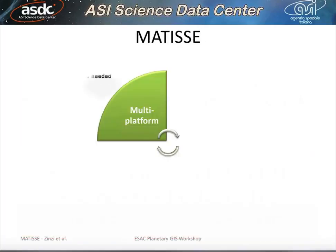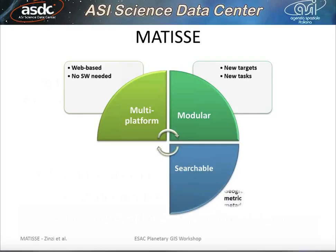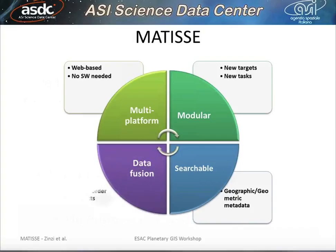Matisse is multiplatform because it's web-based and therefore no software is needed. It's modular, and new targets and new tasks can be added when needed. It's searchable because it has a searchable database for geographic and geometric metadata, and allows data fusion with high-order products such as mosaics, ratios, or false-color visualizations.